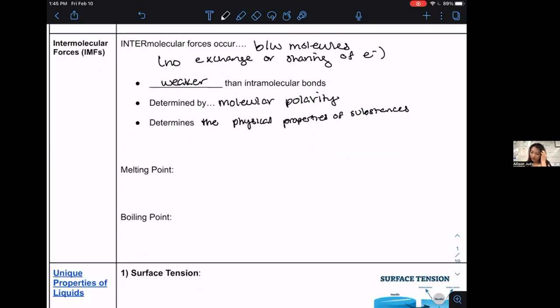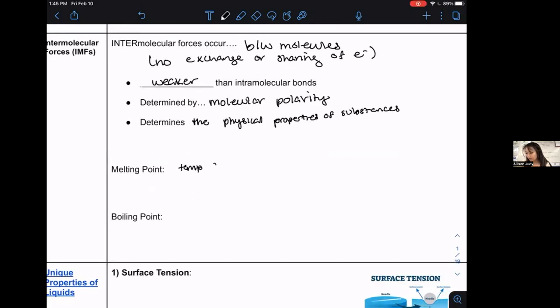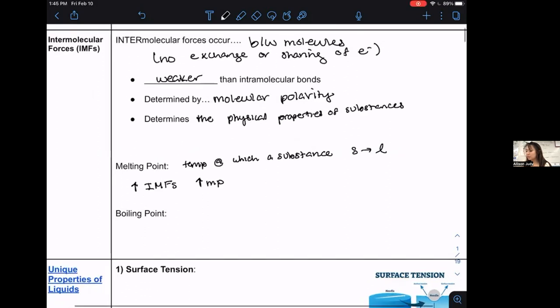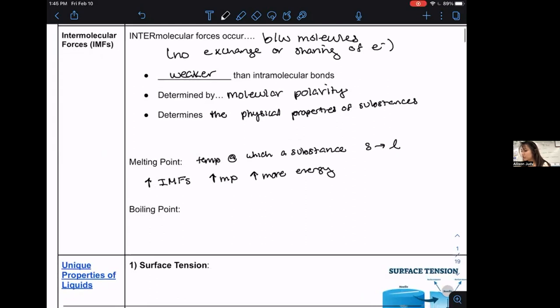For example, melting point. That is the temperature at which a substance goes from a solid to a liquid, right? So the higher the IMFs, the higher the interactions between the molecules, the higher the melting point, cause you need more energy to separate. They're not really breaking any bonds, we're just separating the molecules. Remember nothing's actually bonded together, they're just interacting like holding hands.